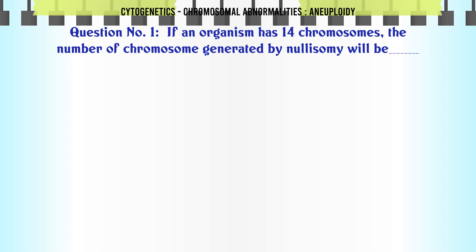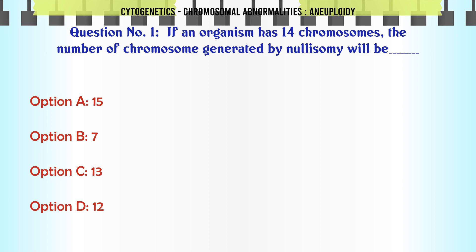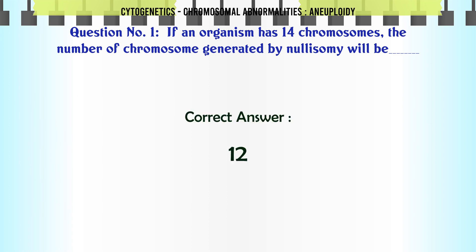If an organism has 14 chromosomes, the number of chromosomes generated by nullisomy will be: a. 15, b. 7, c. 13, d. 12. The correct answer is 12.